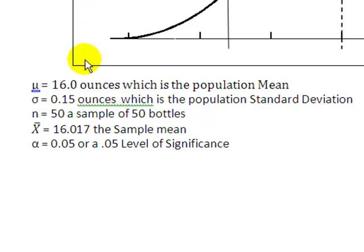It says they use a machine to dispense ketchup that follows a normal distribution with a mean of 16 ounces. So I know that the mean of 16 ounces is the population mean.